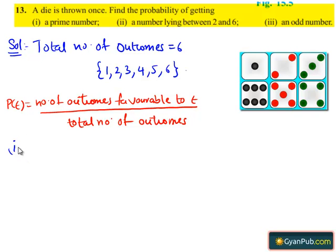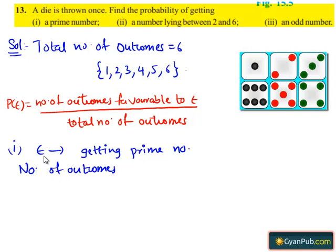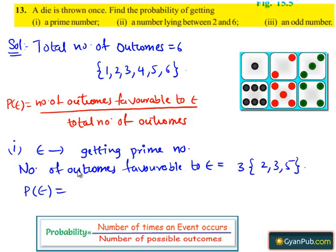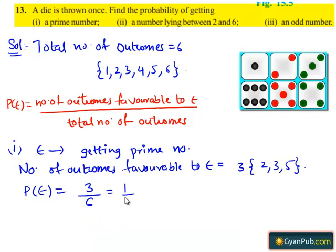Now let us see the first part. Let E be the event of getting a prime number. The number of outcomes favorable to event E equals 3, which are 2, 3, and 5. We know the total number of outcomes equals 6, so P(E) = 3 divided by 6. Here 3 is a common factor; 3 goes into 3 once and into 6 twice. Therefore the probability of getting a prime number is 1 divided by 2.